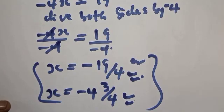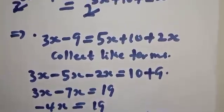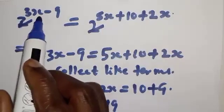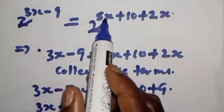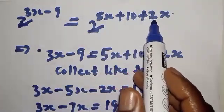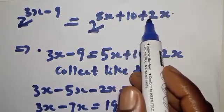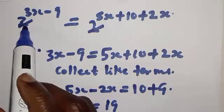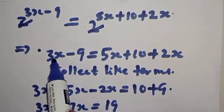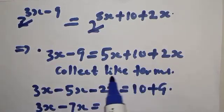Let's recap. You can see that equation has been solved easily. From the simplified form we have 2 raised to power 3x minus 9 equal to 2 raised to power 5x plus 10 plus 2x, because the minus 2x was in the denominator before, so moving it up makes it plus 2x.